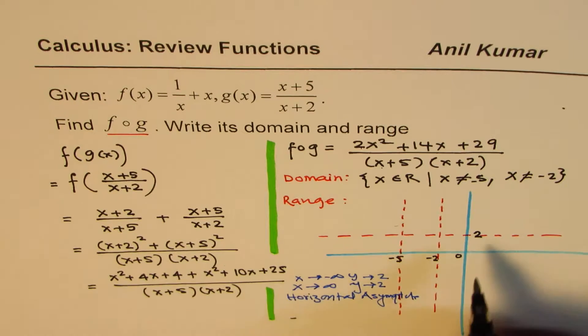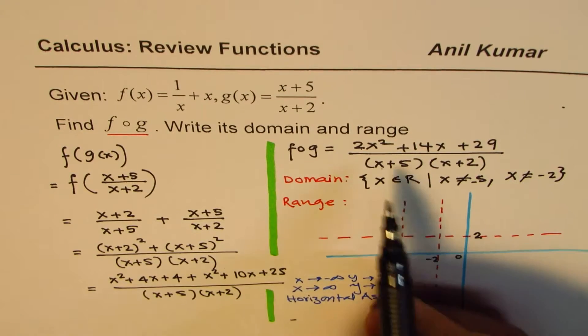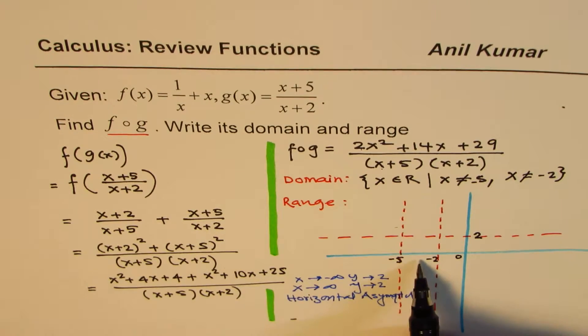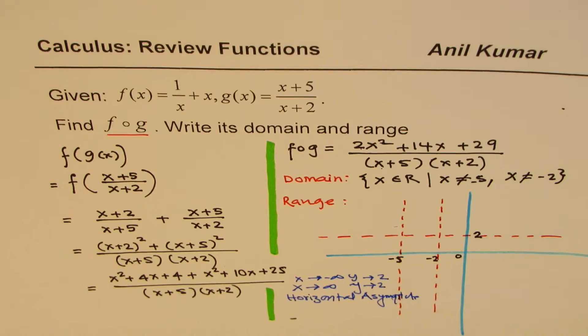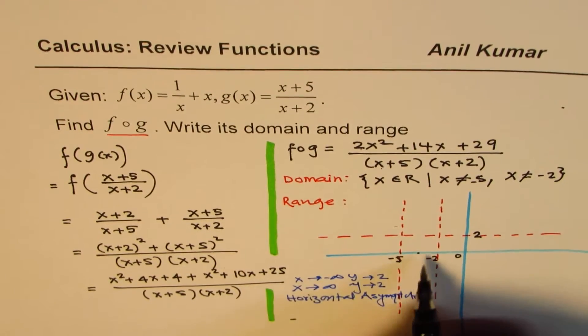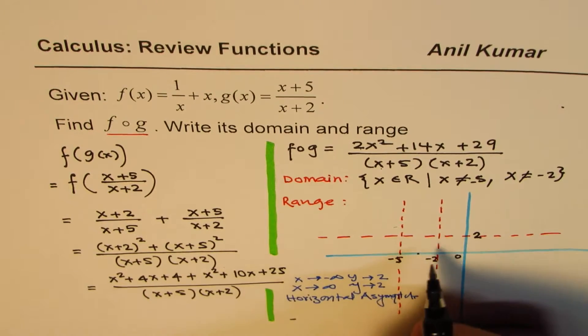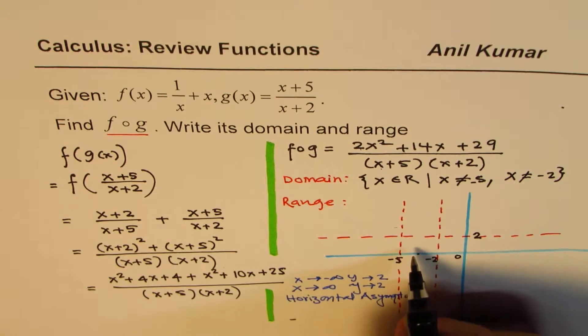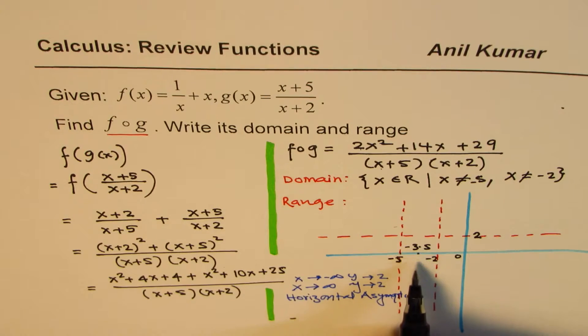Now the second part to understand here is that within this interval, we can have a local maximum, which should be right in the center of these. So without getting into details, what we can do is find the value of this center point. The center point here is average of minus 5 and minus 2. So when you add and divide by 2, you get minus 3.5.